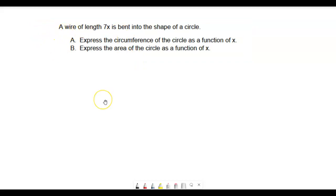So it says a wire of length 7x is bent into the shape of a circle. If we were to take some wire here, something like this, the length of that we would call 7x and what we're trying to do is take that wire and bend it into a circle like this.